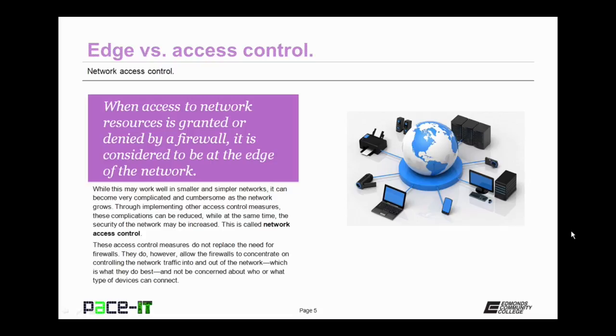Through implementing other access control measures, these complications can be reduced, while at the same time the security of the network may be increased. This idea is called Network Access Control or NAC. These access control measures do not replace the need for firewalls. They do, however, allow the firewalls to concentrate on controlling network traffic into and out of the network. That is what they do best, and that is what they should be concerned about, not who or what type of device can connect to the network.